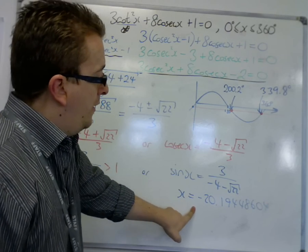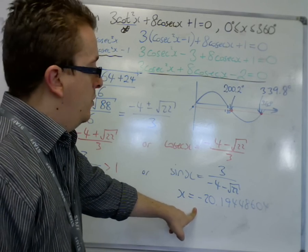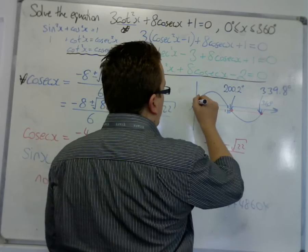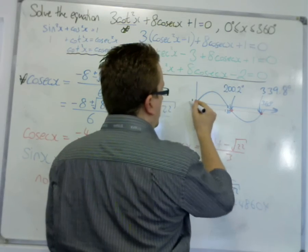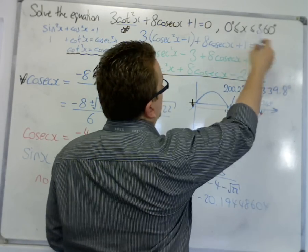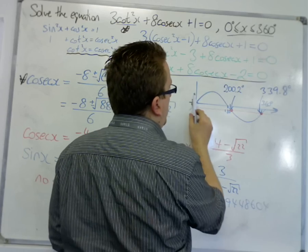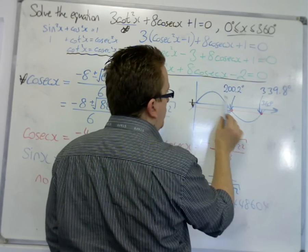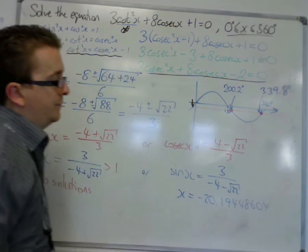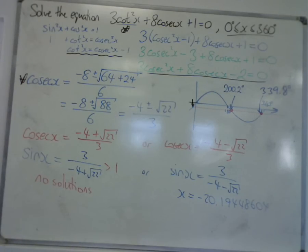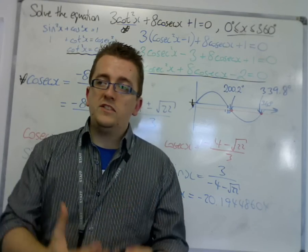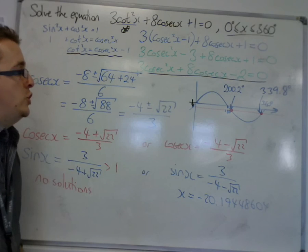Then using inverse sine, we can get the -20.19448604, which gave us this point. We don't want that point though, because we want between 0 and 360. So we've got to add 360 to get that one, and then take it away from 180 to get that one. And then you're done. So that's a more long-winded example of solving a trig equation, and you can see how involved it can get.